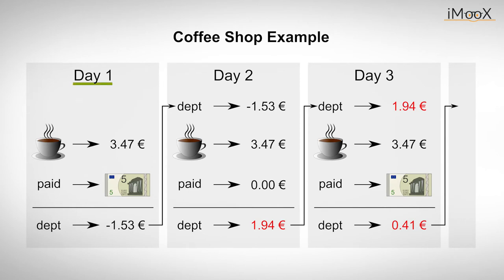On the first day, the engineer pays 5 euros as agreed. He notes at the end of the day that he owes the cafe minus 1.53 euros. The minus sign simply indicates that the engineer paid too much. When ordering at the cafe on the second day, the engineer reminds the shop assistant of the overpayment the day before. So he now only has to pay 3.47 minus 1.53 is 1.94 euros. This is below 2 euros and 50 cents and, as agreed, he pays nothing and notes again that he owes the cafe 1.94 euros.